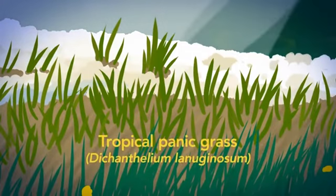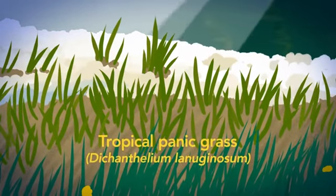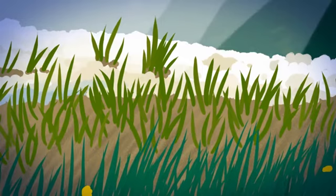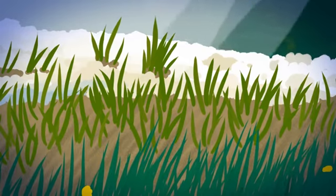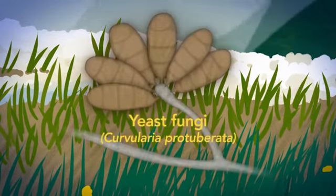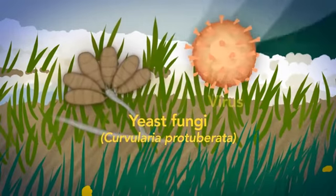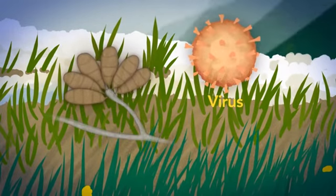Tropical panic grass grows comfortably in soil temperatures up to 149 degrees Fahrenheit, but only when it is colonized by yeast that in turn is infected with a virus. The virus is the crucial piece of the puzzle.